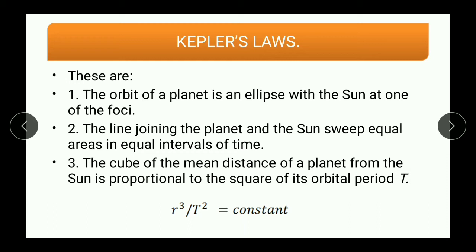The first law states the orbit of a planet is an ellipse with the sun at one of the foci. Though in pictures you might see planets revolving in circular orbits, every planet actually revolves in an elliptical orbit which has two foci, and the sun is at one of them. The line joining the planet and sun sweeps equal area in equal intervals of time. The third law gives us R cubed upon T squared equals constant. These were the three laws proposed by Kepler.